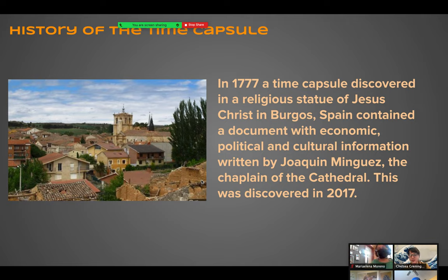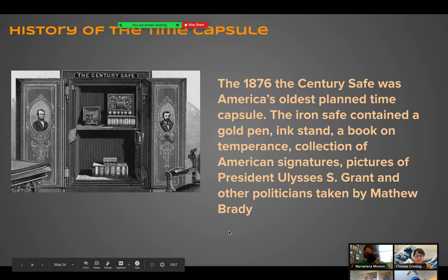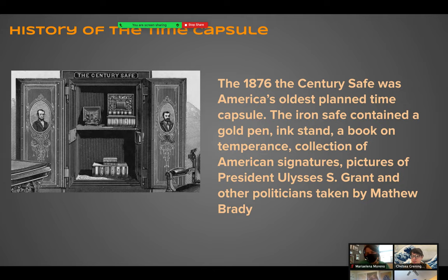Some examples of time capsules throughout history: one was created in 1777, discovered in a religious statue of Jesus Christ in Burgos, Spain, containing economic, political, and cultural information written by the chaplain Joaquin Minguez — discovered in 2017. Another from 1876 is called the Century Safe, America's oldest planned time capsule. The iron safe contained a gold pen, inkstand, a book on temperance, a collection of American signatures, and pictures of President Ulysses S. Grant taken by famous war photographer Matthew Brady.